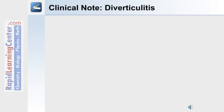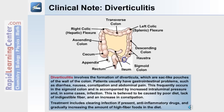In this clinical note, we'll discuss diverticulitis. Diverticulitis involves the formation of diverticula, which are sac-like pouches of the wall of the colon. Patients usually have gastrointestinal problems such as diarrhea, nausea, constipation, and abdominal pain. This most frequently occurs in the sigmoid colon and is accompanied by increased intraluminal pressure and in some cases infection. The cause is believed to be poor diet, lack of indigestible fiber, and increased constipation. Treatment includes clearing infection, use of anti-inflammatory drugs, and gradually increasing high-fiber foods in the diet.